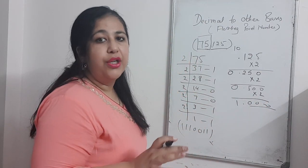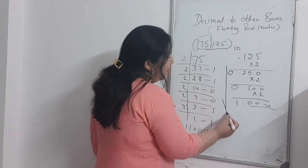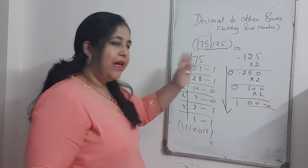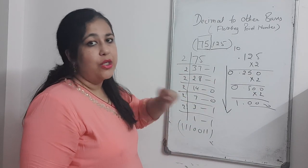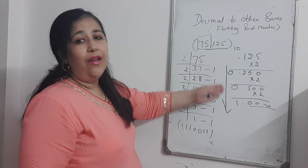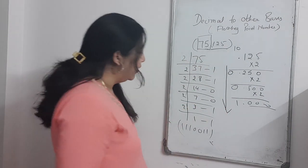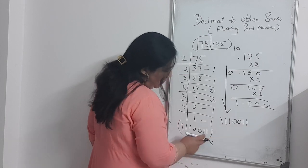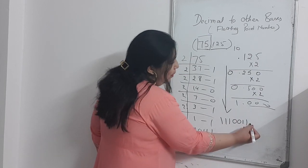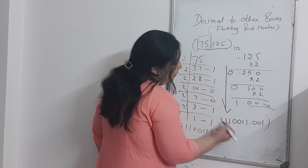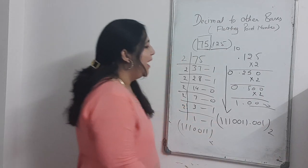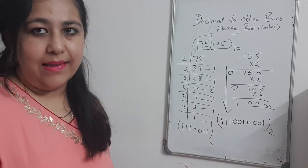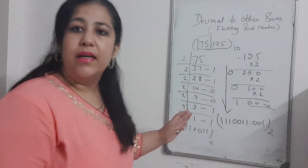We include these in the conversion. The final answer will be 1110011.001, which is the binary equivalent of the given decimal number 75.125. That is how the conversion happens.